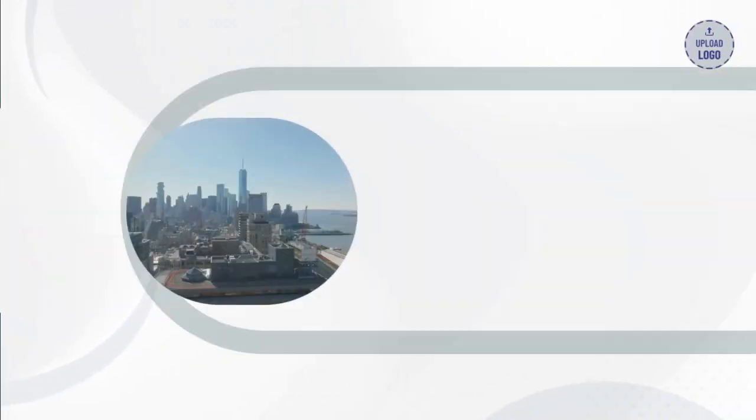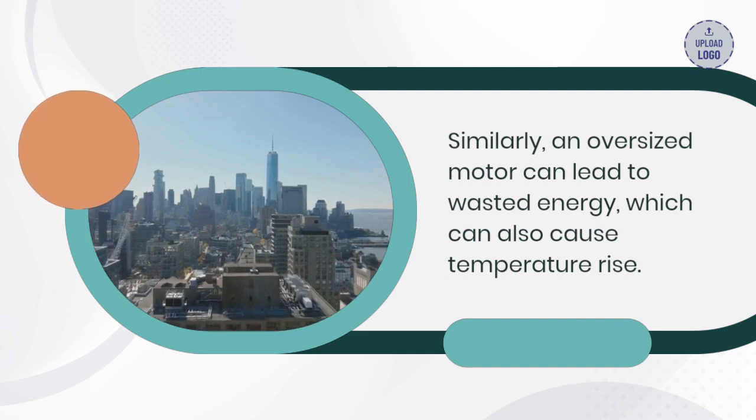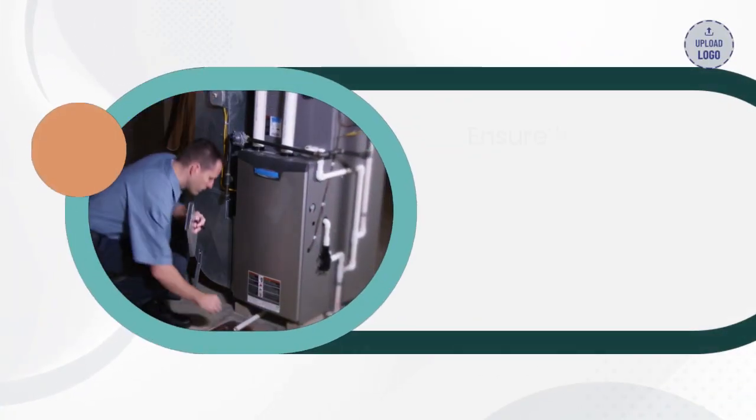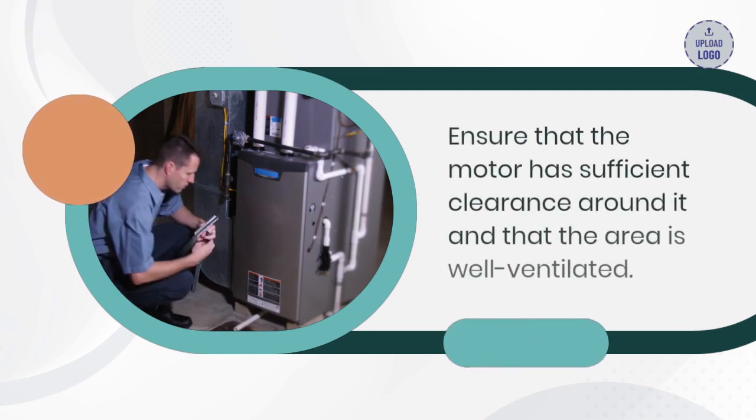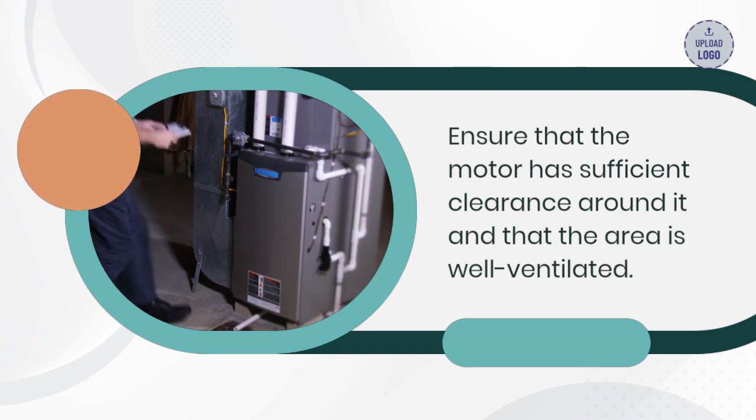Proper ventilation is critical to prevent temperature rise due to inadequate cooling. Ensure that the motor has sufficient clearance around it and that the area is well ventilated. This can be achieved by using a fan, installing ventilation ducts or grills, or ensuring that the motor is not enclosed in an area with limited airflow.